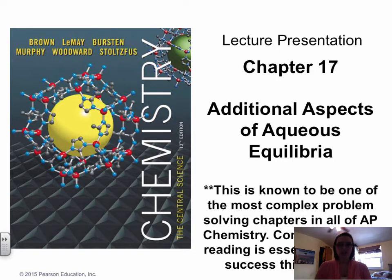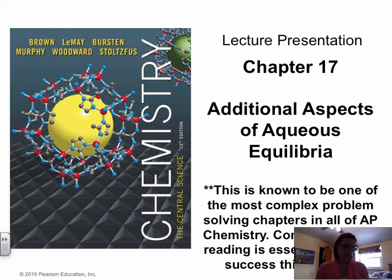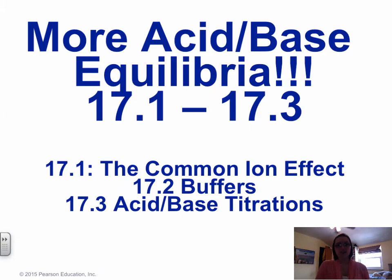This chapter is known to be one of the most complex problem-solving chapters in all of AP Chem. It's very problem-solving based, so completing prior reading or watching videos is going to be essential for your success. It's also going to help to take your time and write down everything you know about a problem and show all of your work. The first three sections are acid-base equilibrium, but this video we're just going to focus on 17.1 — the common ion effect.